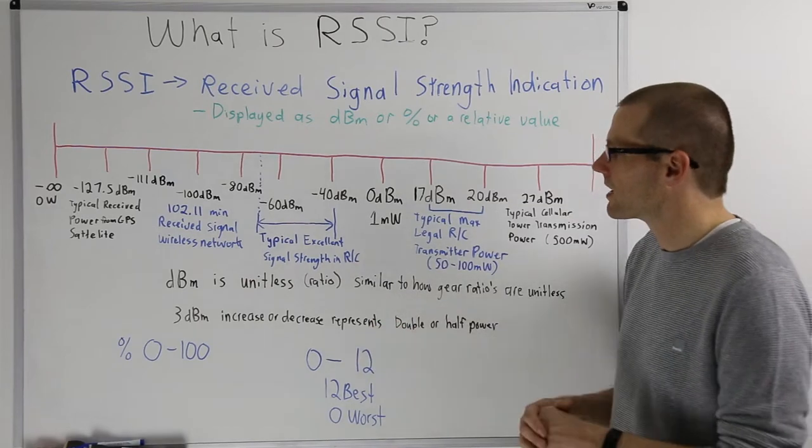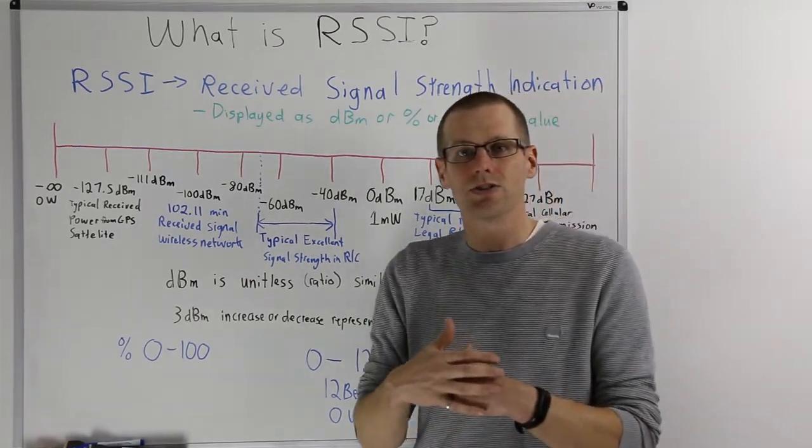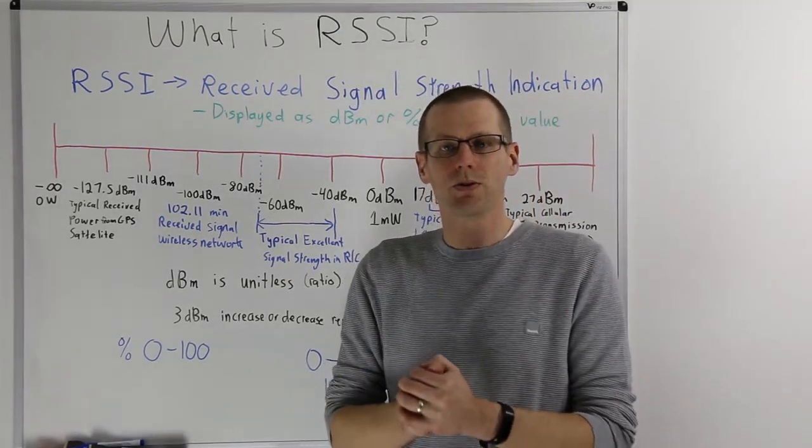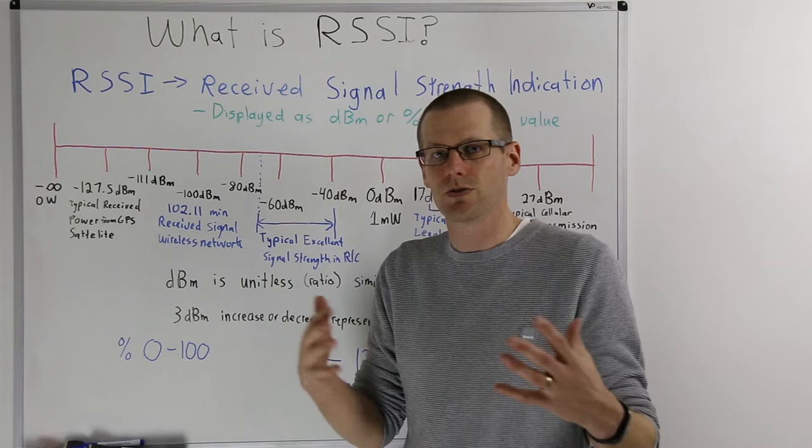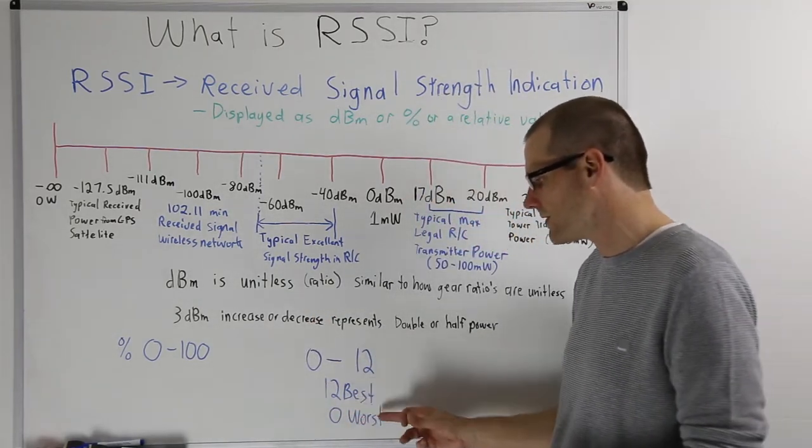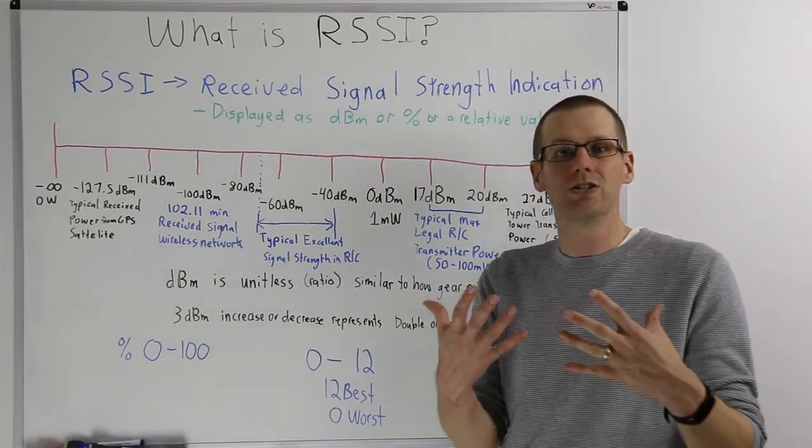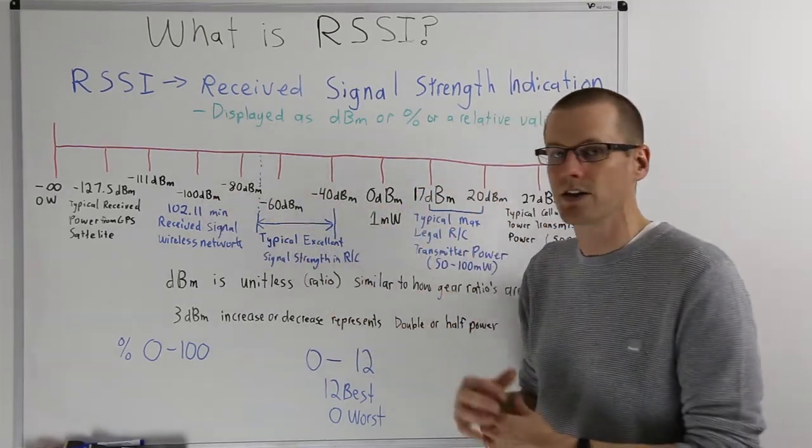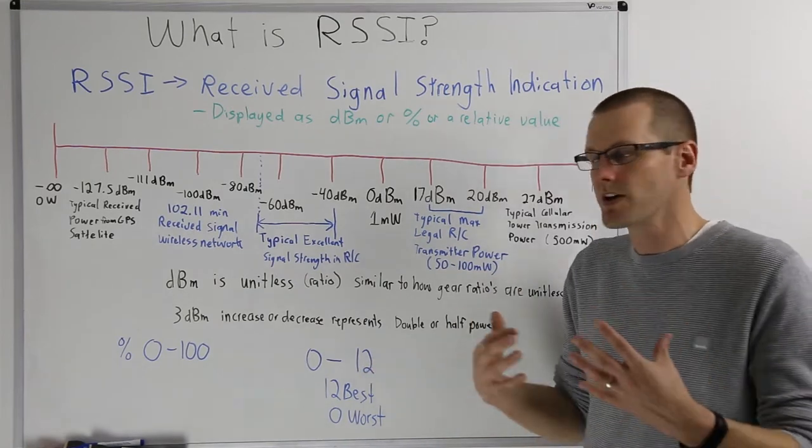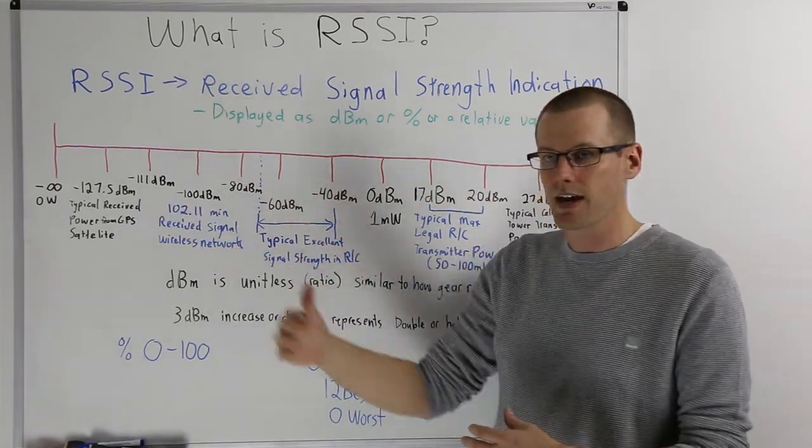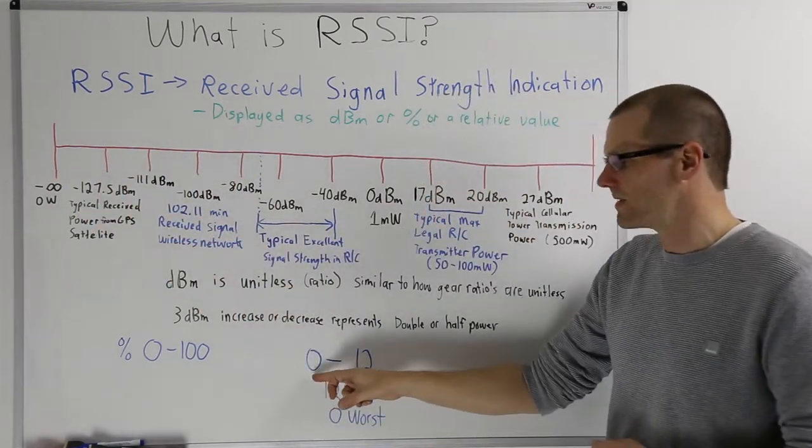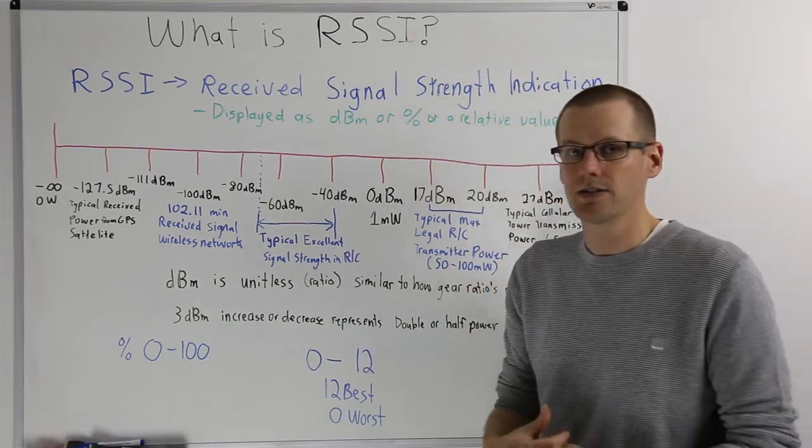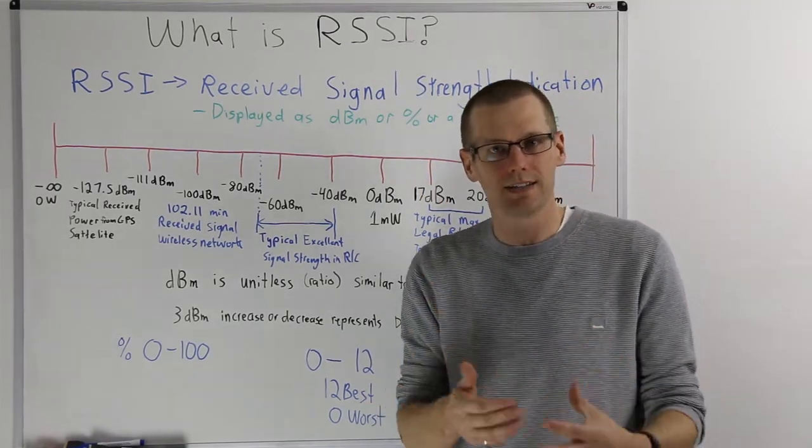So now the other thing that we can talk about is this relative value. This is where a manufacturer, instead of picking zero to 100 represented by a percentage, they come up with their own scale. They can come up with their own scale from zero to 30, or zero to 12, where 12 is the best and zero is the worst. And that's essentially what RSSI is in our radio systems.